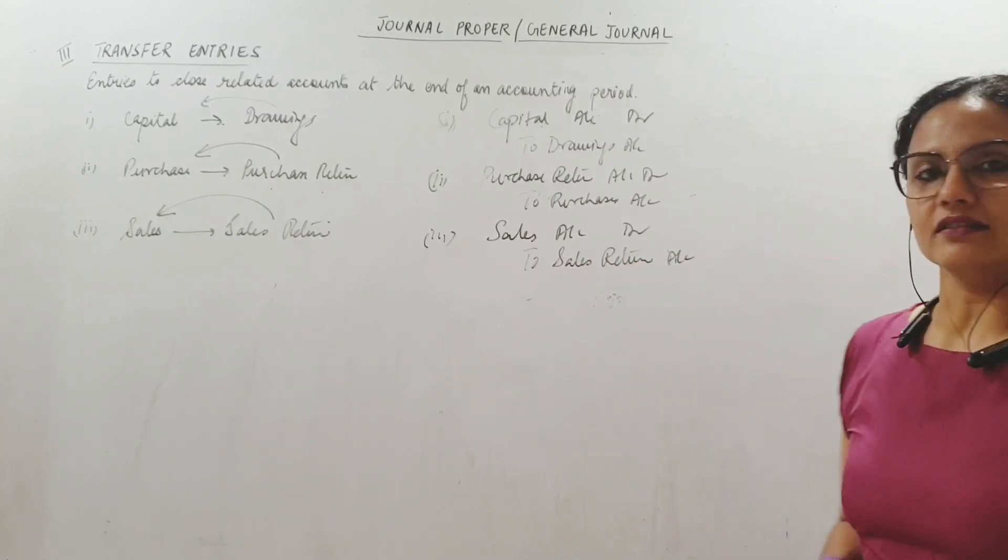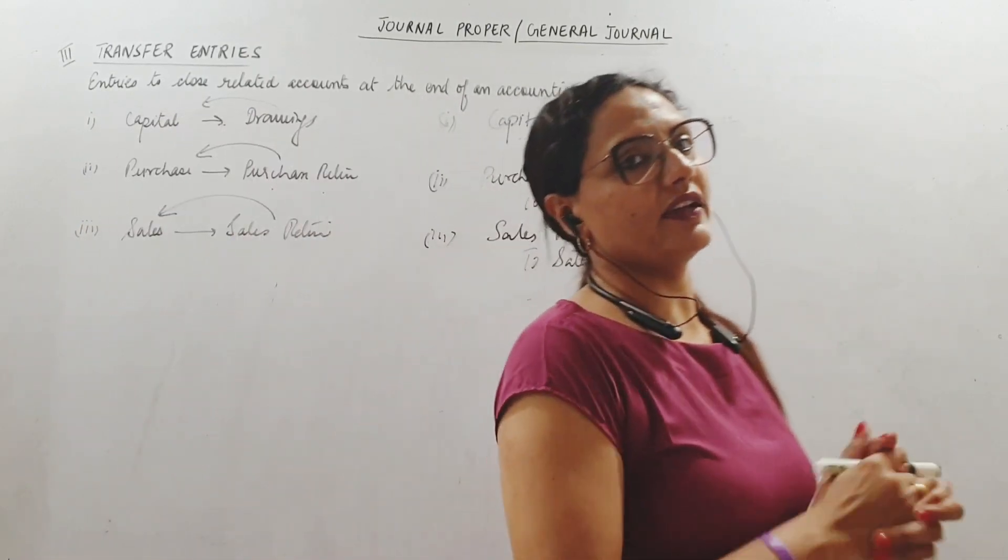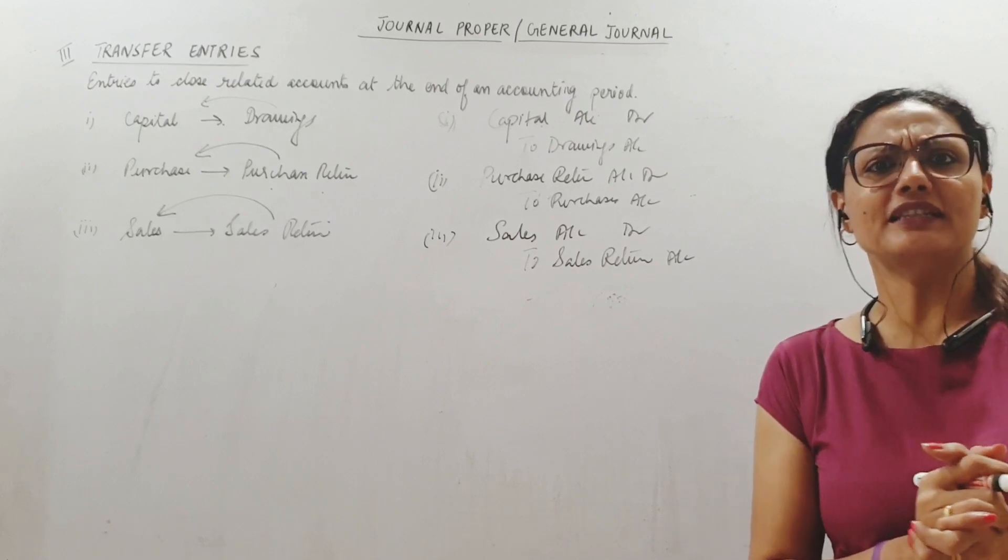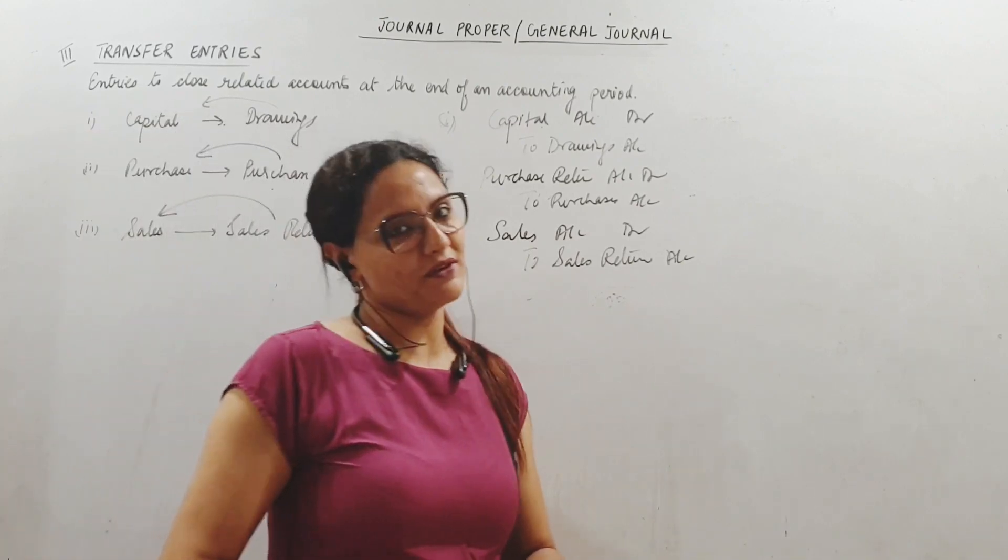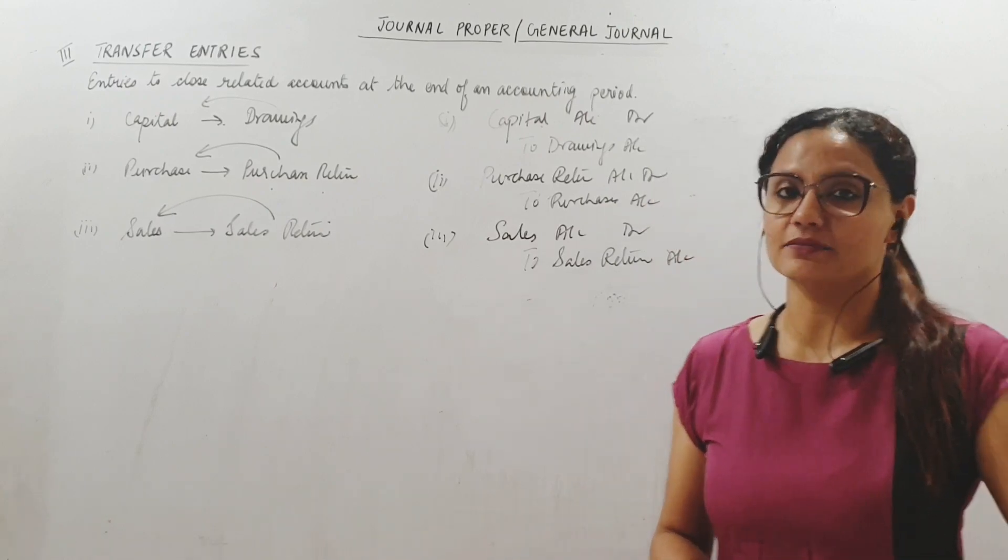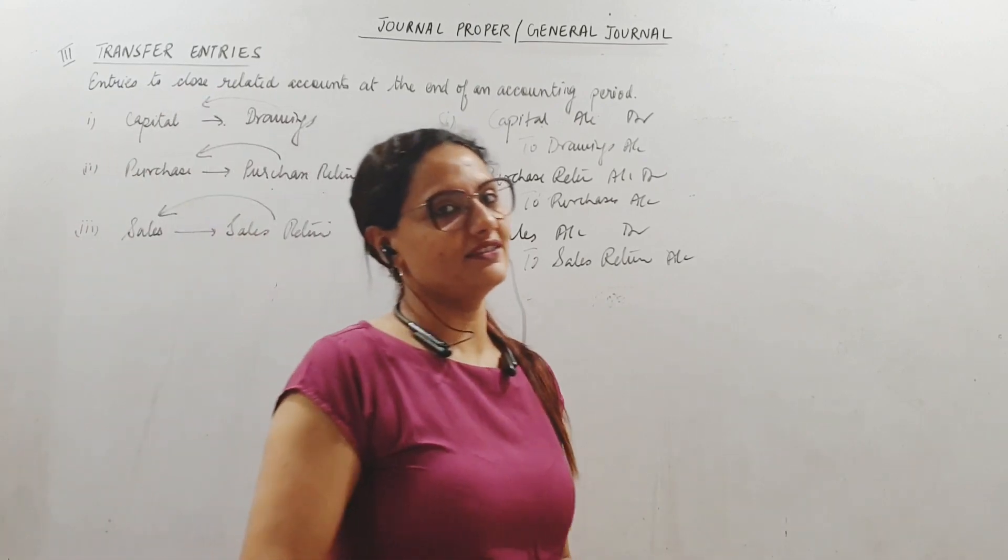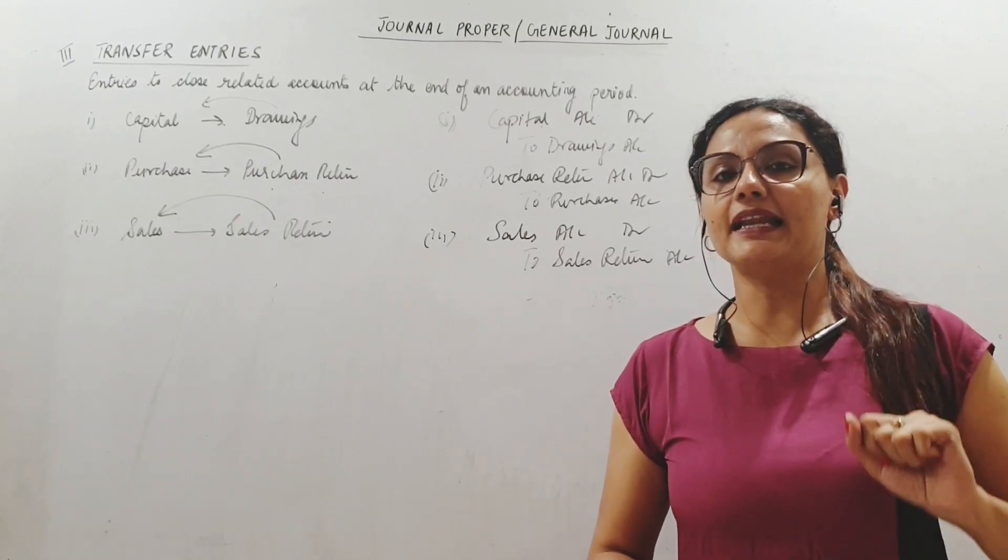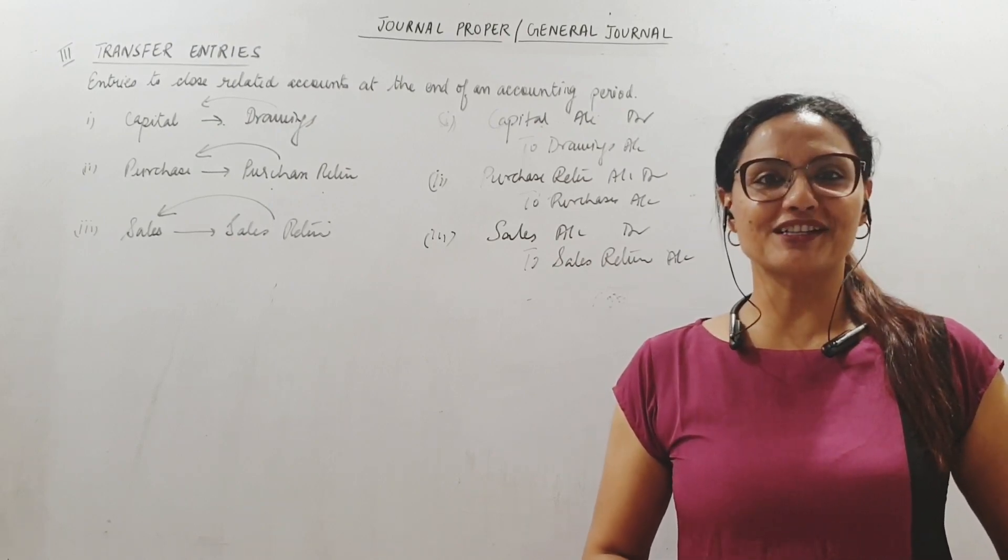Similarly for sales. Sales is credit, sales return is debit usually. Now reverse it. Sales should decrease, so sales account debit. Sales is my income, it is decreasing because we had sales return, so I debit it. And to close sales return I credit sales return account. These are transfer entries. Related accounts are closed by transferring one account into the other. Easy, absolutely. Accounts is always easy. Keep enjoying doing more journals, and this was journal proper part one. We will have more types of entries in video part two. Keep watching, press the bell icon for notifications, and please subscribe, like, and share my channel. Thank you so much for watching, take care.